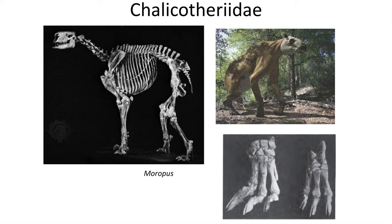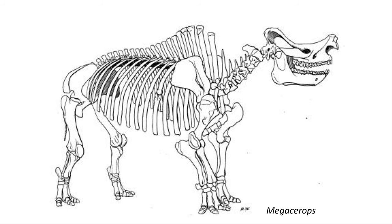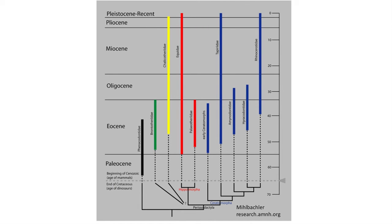The chalicotheres were large browsing mammals with massive claws and horse-like faces; the best known is Moropus from the Miocene. The bronotheres — large rhino-like mammals, some with two large horns on their skulls — were common during the Middle to Late Eocene but went extinct at the start of the Oligocene. Horses, tapirs, and rhinos survived across the Eocene-Oligocene boundary, though they were not as diverse as Earth's climate began to cool. Four groups hung on through the boundary, with Chalicotheriidae surviving until the end Pliocene.